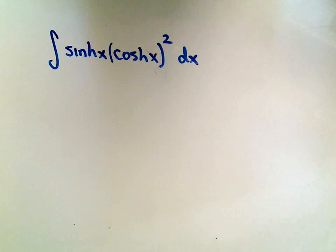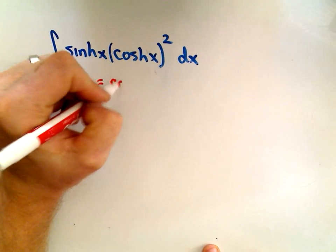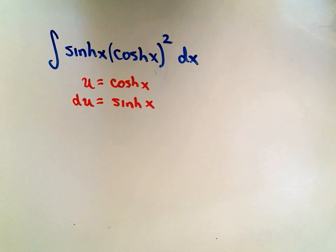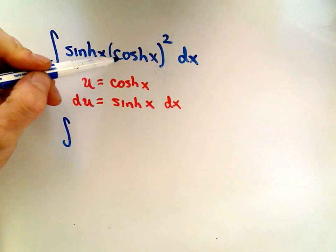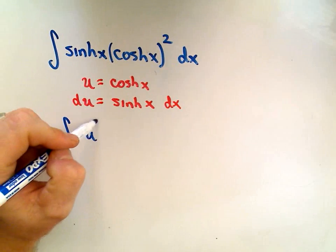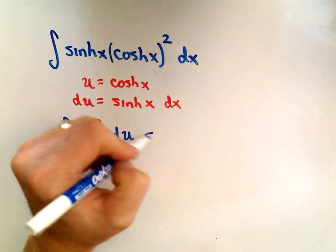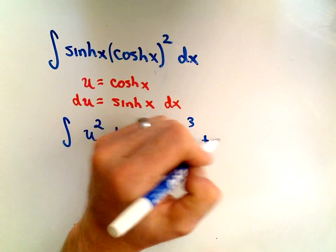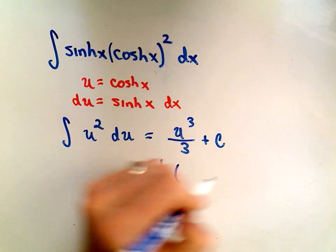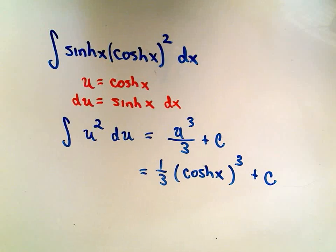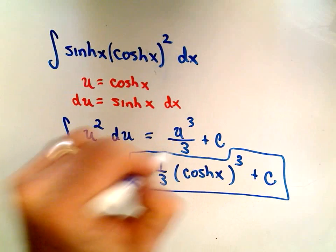So we're going to do a u substitution. I think we can let u equal hyperbolic cosine. The derivative of that is simply hyperbolic sine. So when we integrate this, hyperbolic cosine I'm replacing with u, so I get u squared. The du is equivalent to hyperbolic sine dx, so we're really integrating u squared du. That'll give us u cubed over three plus c, or one-third u cubed plus c. We just plug our u back in, and there's our antiderivative. Just good ol' u substitution.